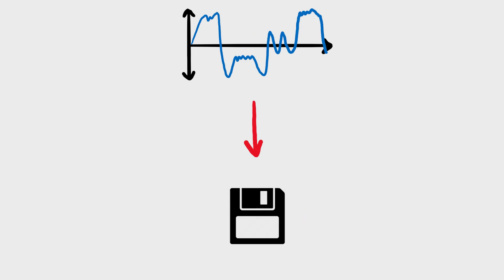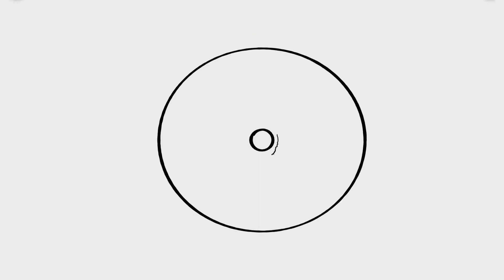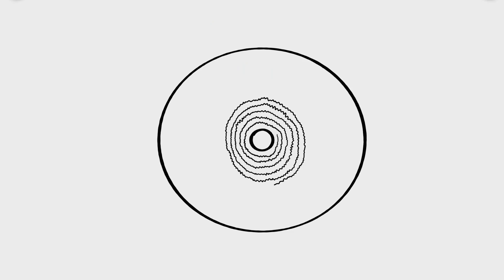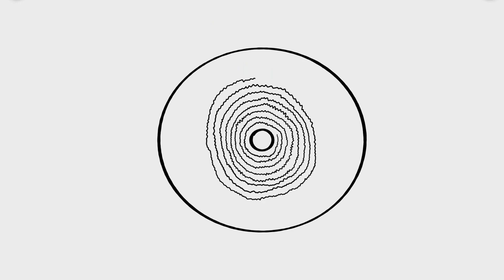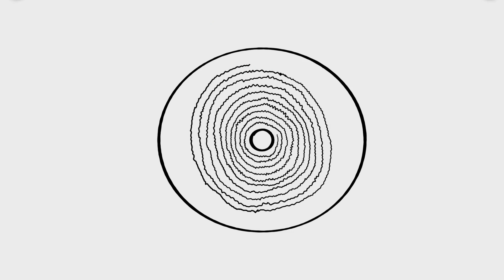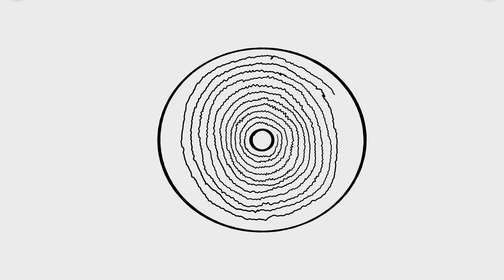The profile of the wave can be stored for playback later. Record players mechanically store the information through detailed carves into discs, but it can also be stored digitally. As long as you produce the pressure waves in the same way as the ones recorded, you'll create the same sound.